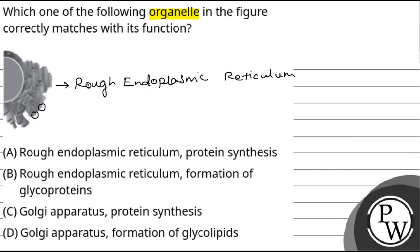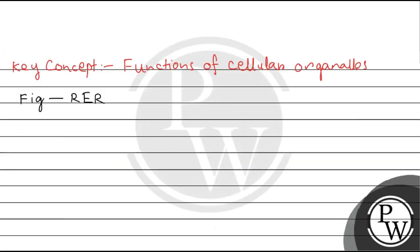Let's analyze the options. The first option is rough endoplasmic reticulum and protein synthesis. This matches the figure. Rough ER is covered with ribosomes, which are responsible for protein synthesis.